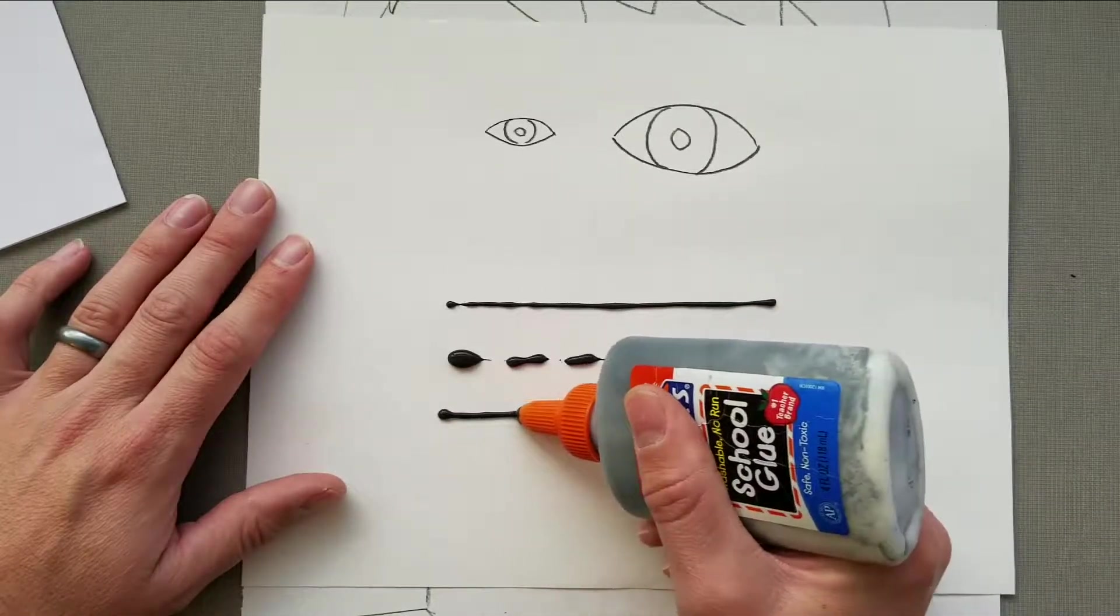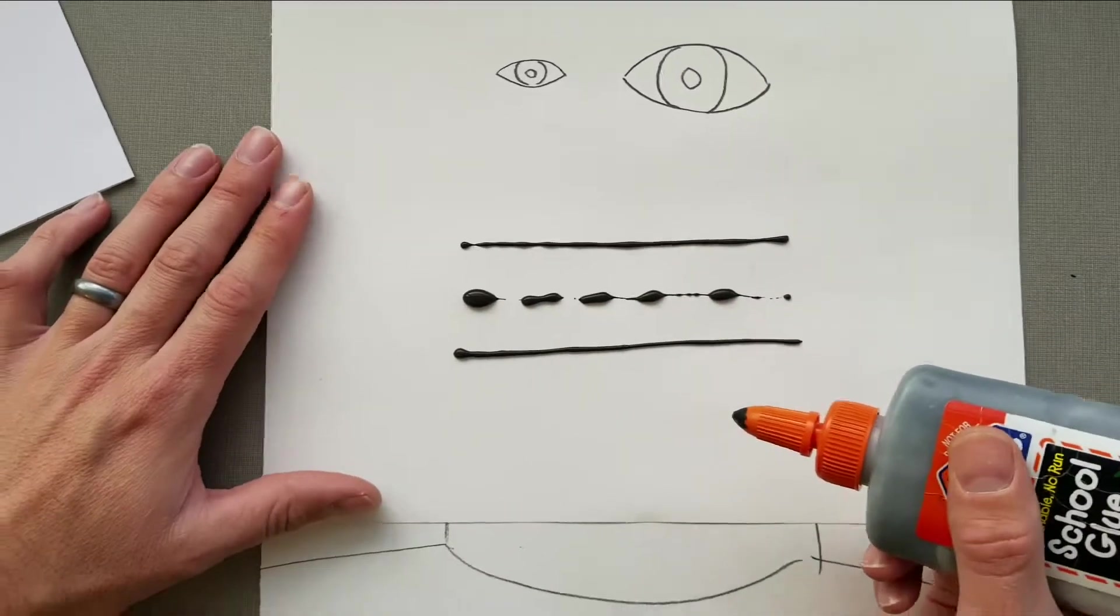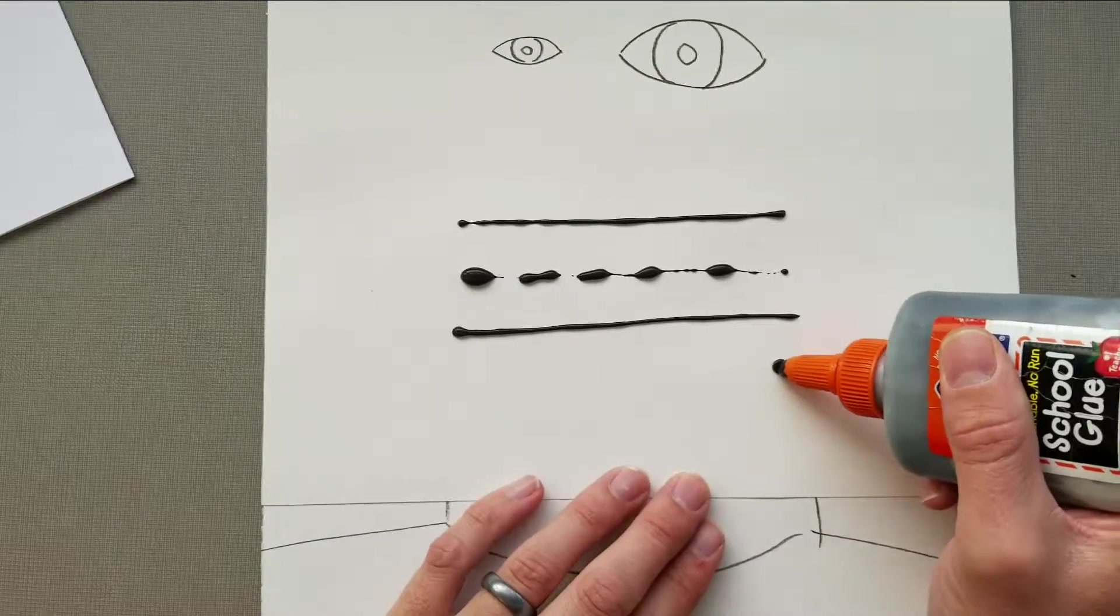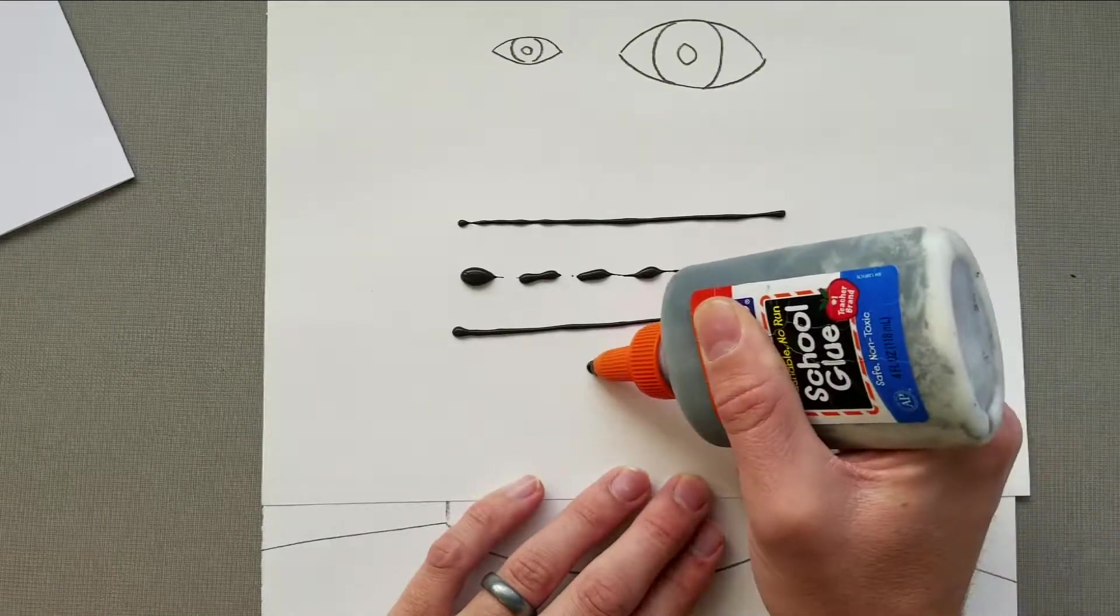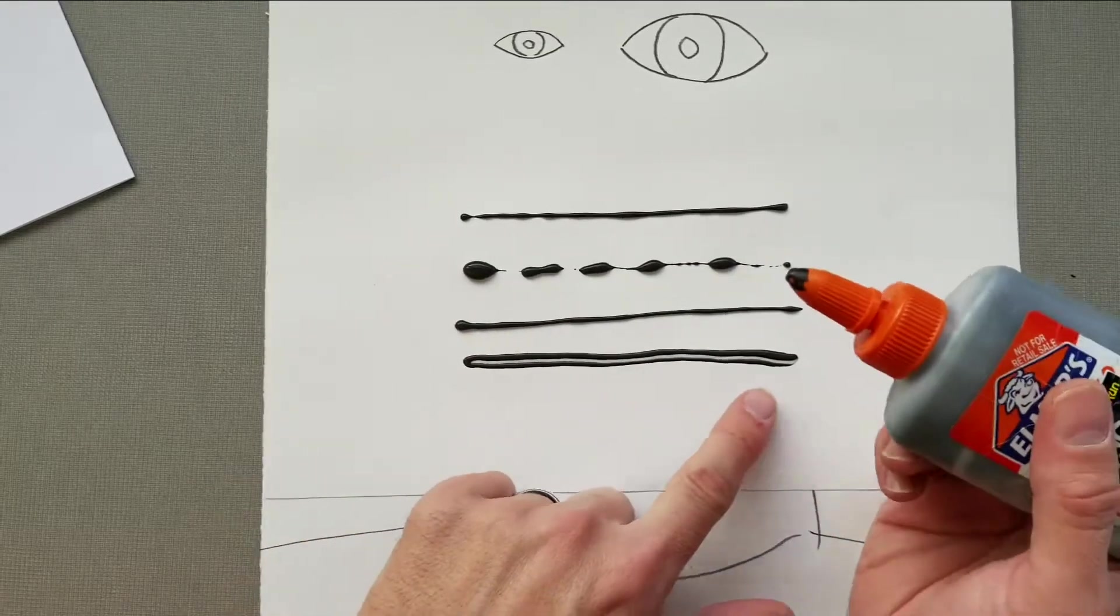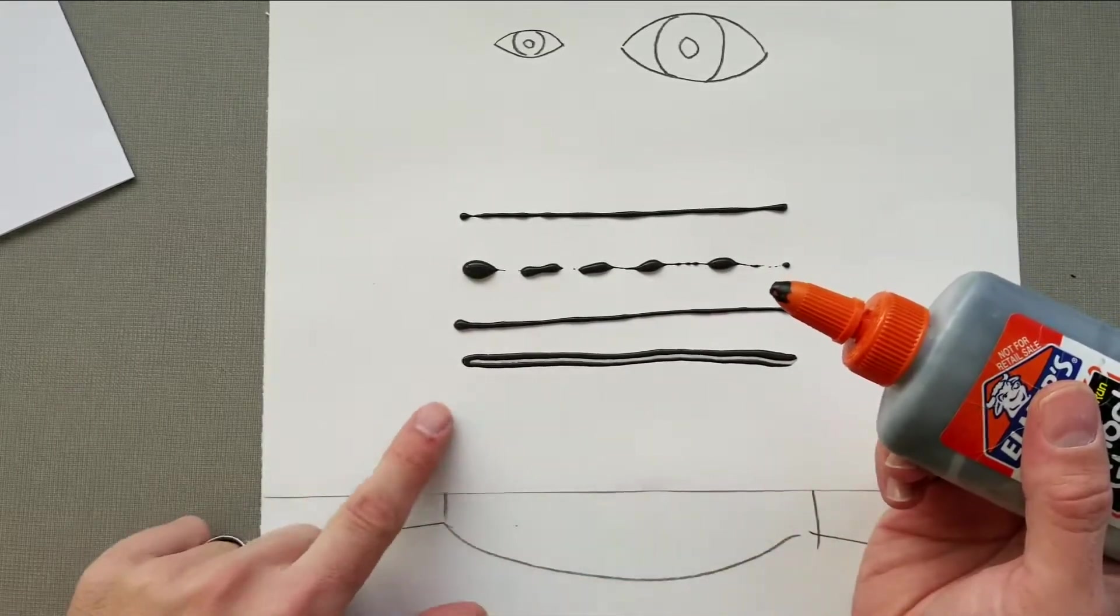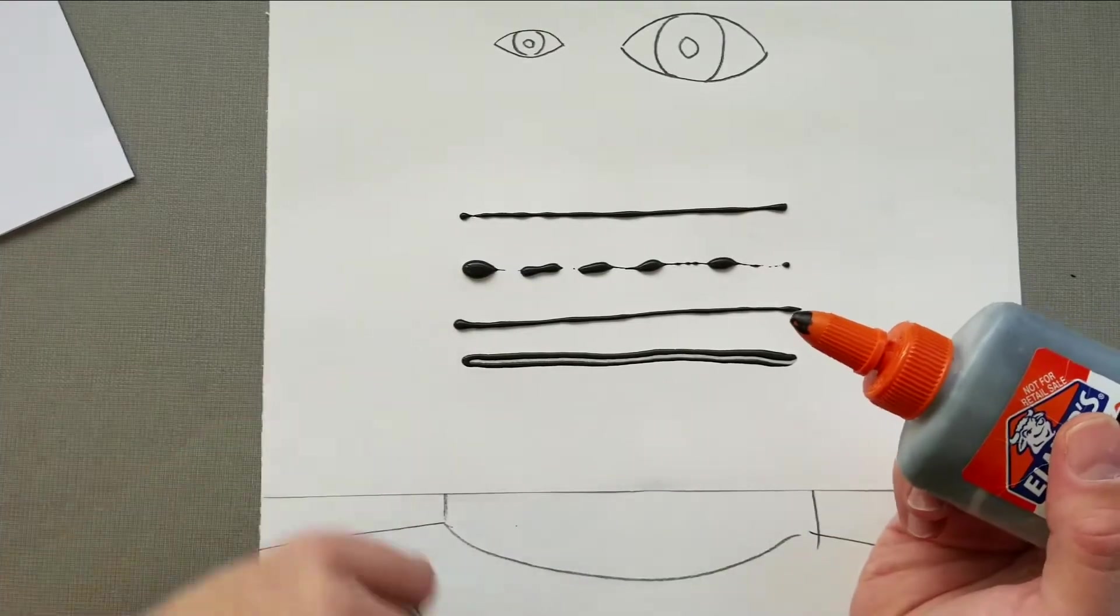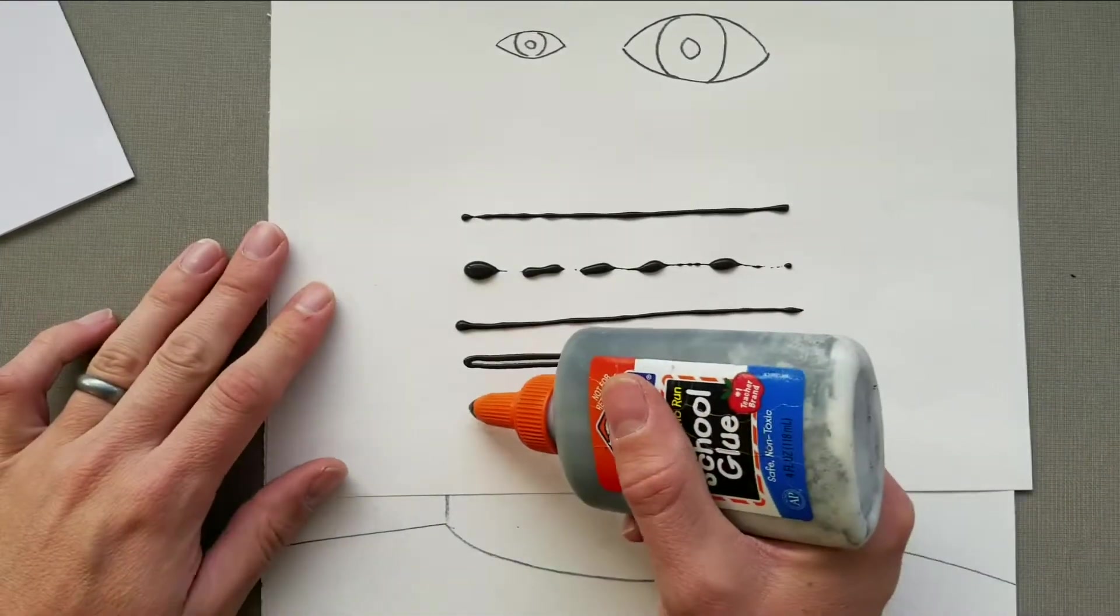If you push it through, usually this is what it ends up looking like - you can see it kind of scrapes some of the glue away and makes it look like two lines instead of one. So just remember to pull it through like this.